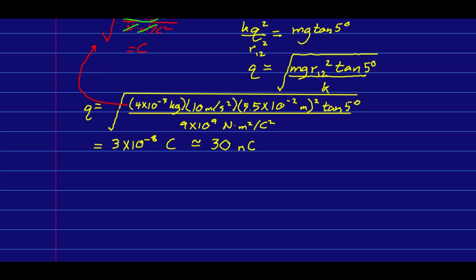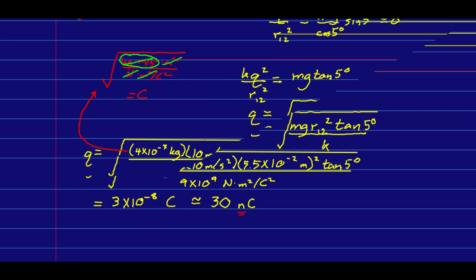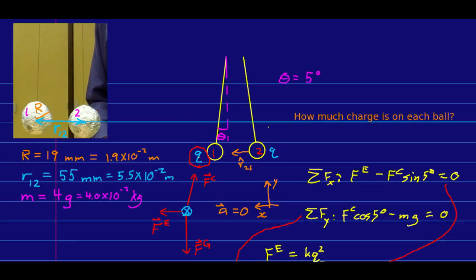We get an answer which to one sig fig, which is all we really have, is three times ten to the negative eight coulombs, or about 30 nanocoulombs. If you don't know your nano micro and so on, get to know them, because we'll have a lot of them this term. Nanocoulombs, or tens of nanocoulombs, turn out to be fairly typical for objects that we charge by rubbing and so on, that are on about the scale of things that you can hold in your hand.